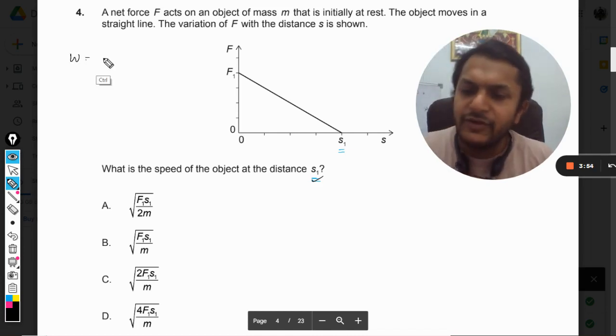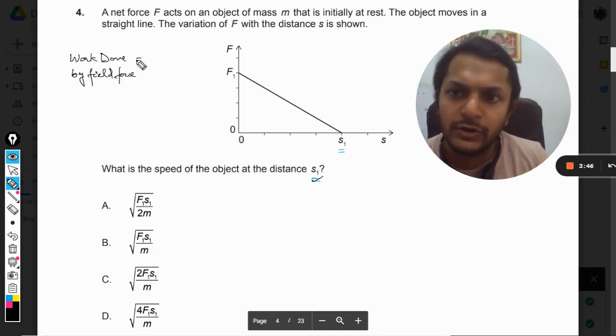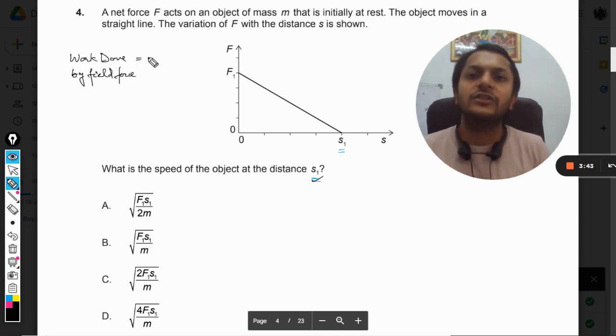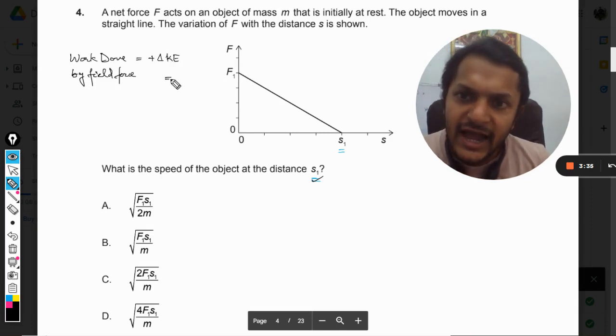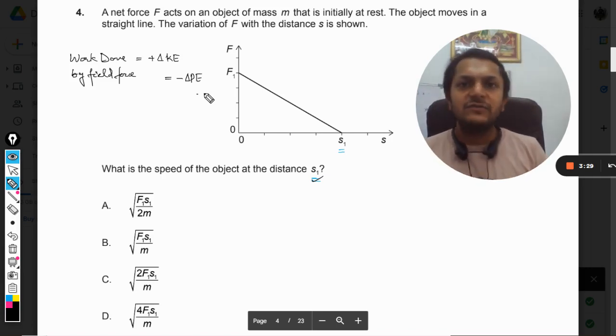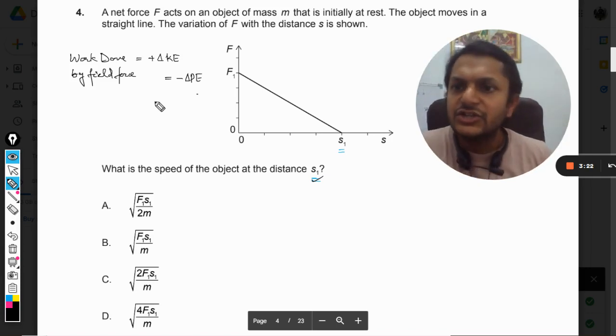Work done by field force is equal to the positive change in kinetic energy and equal to the negative change in potential energy. In this case, because the body is moving in a straight line, we will not consider the changes in potential energy but we consider the change in kinetic energy.